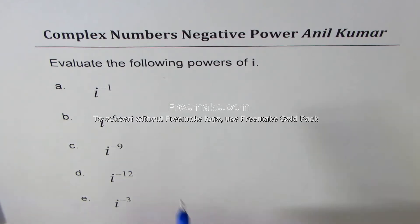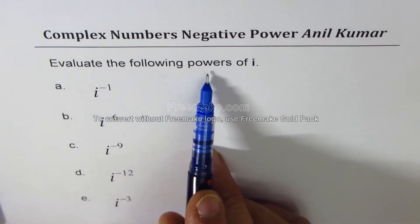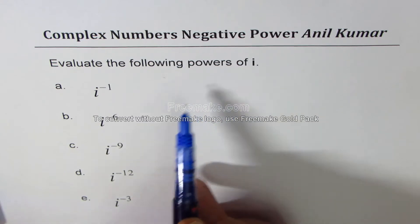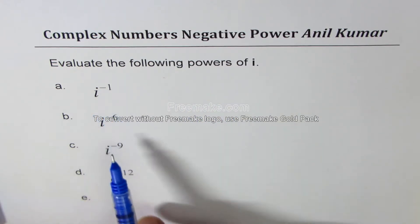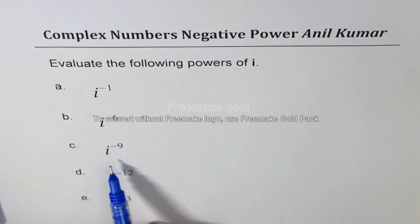The question here is evaluate the following powers of iota i: i to the power of minus 1, i to the power of minus 6, i to the power of minus 9, i to the power of minus 12, and i to the power of minus 3.